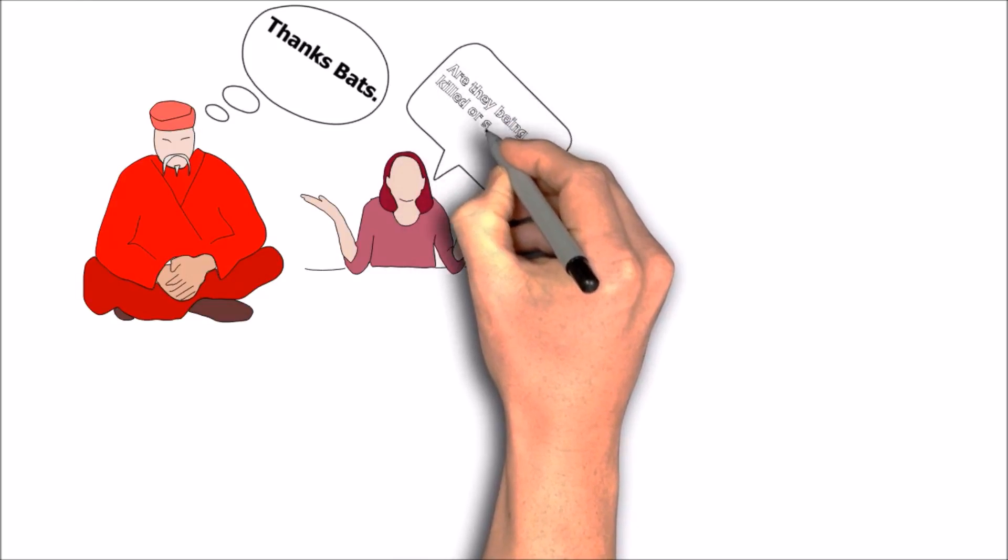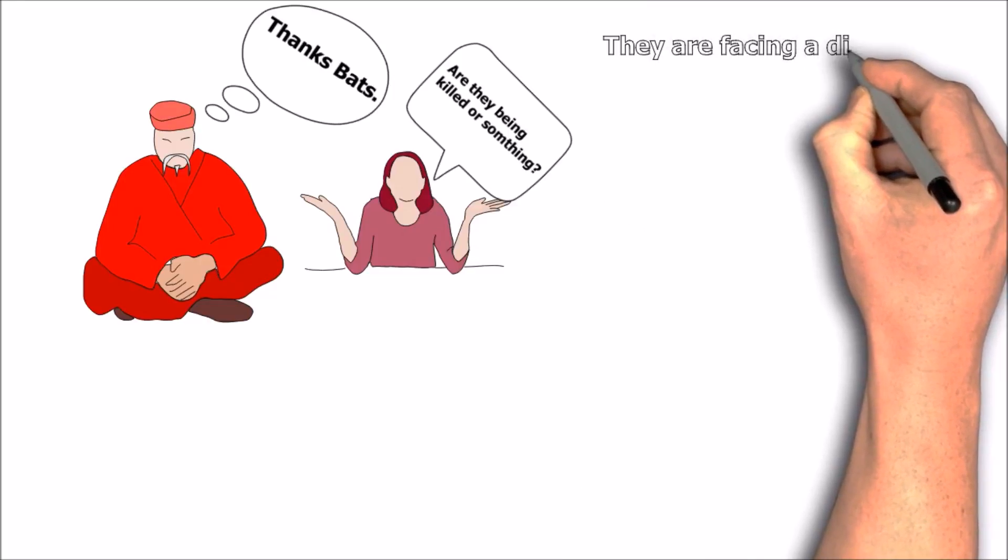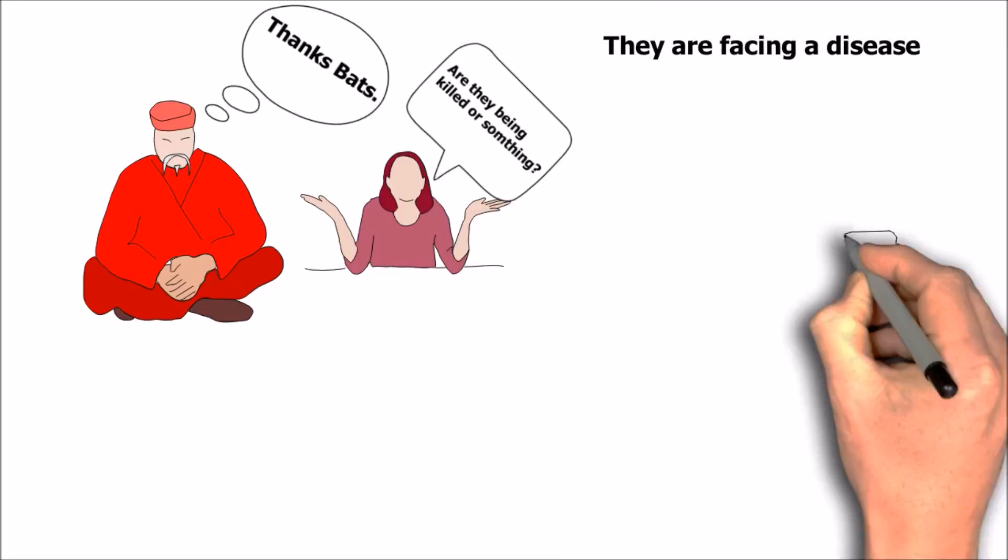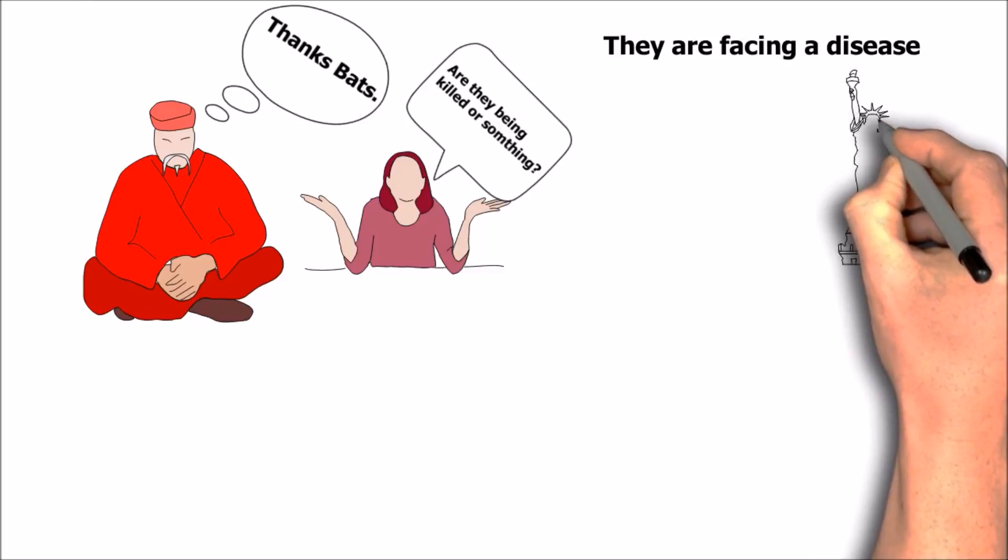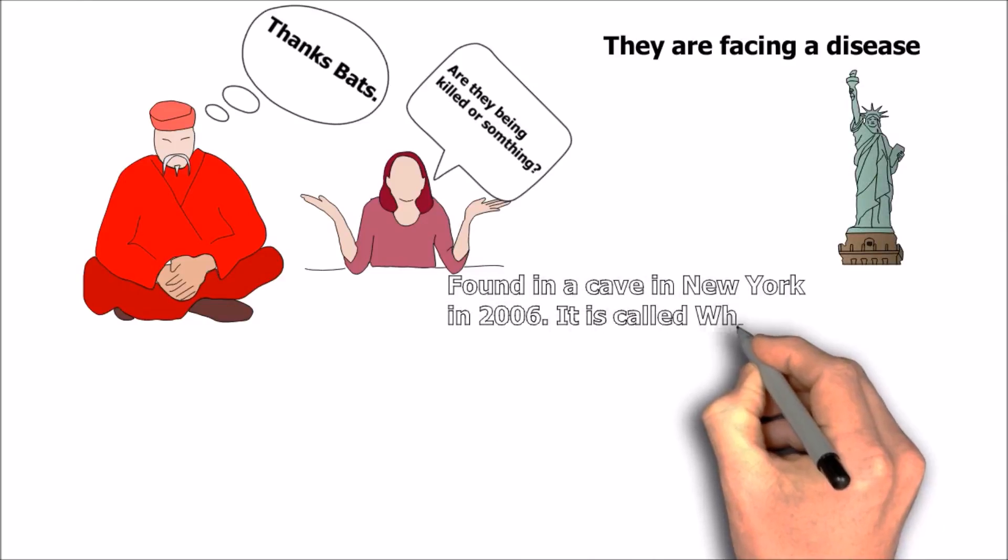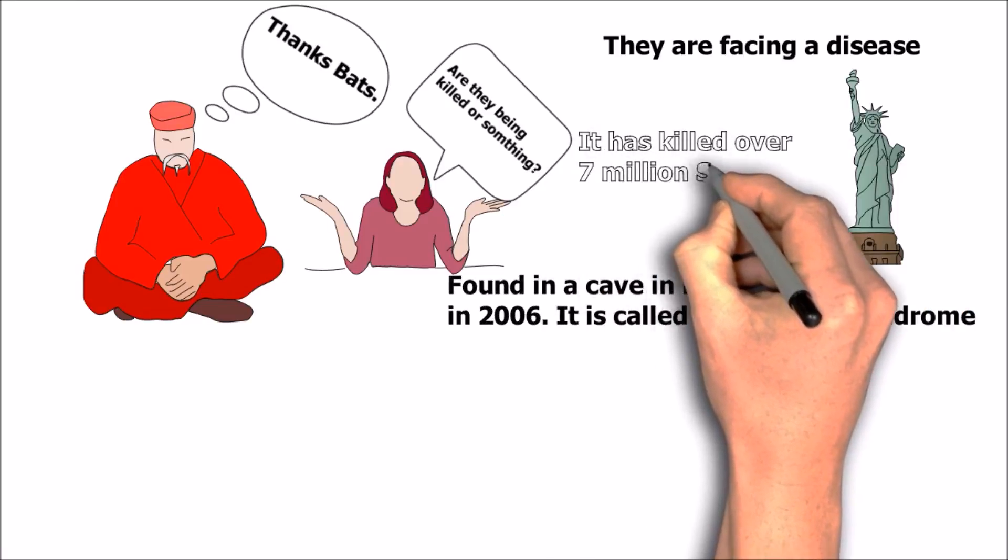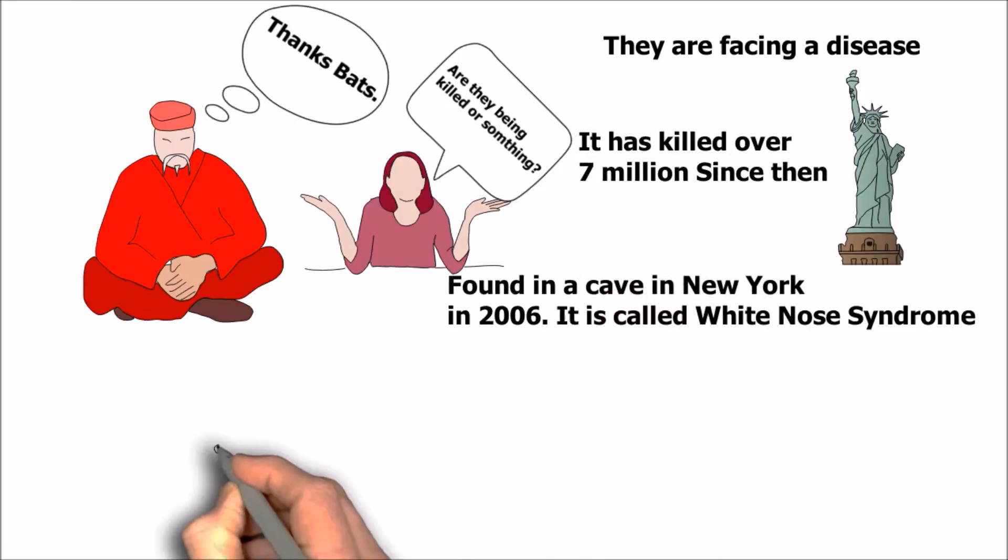But, well, they're not going to die soon, but they are facing a pretty terrible disease, and it's called white-nose syndrome. It was found in New York in 2006, and since then, it has killed up to 7 million bats. That's a lot of bats.